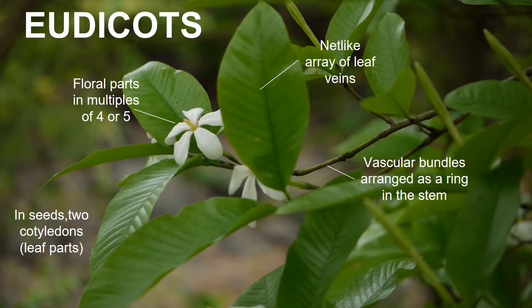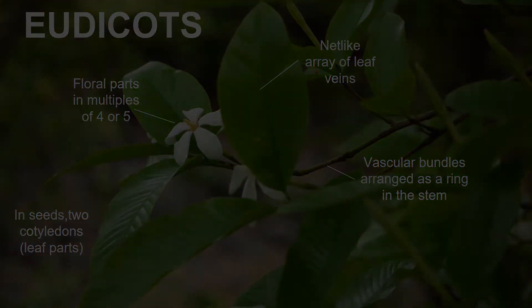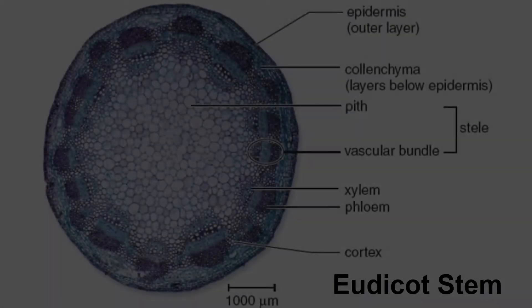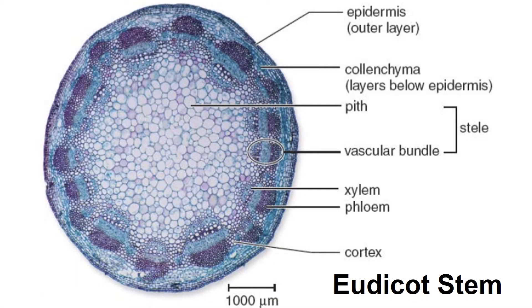Rubiaceae are classified as eudicots, as demonstrated by their number of flower petals and their net-like array of leaf veins. This also means that their seeds must have 2 cotyledons and their stems contain vascular bundles arranged in ring patterns. This stained cross-section of a eudicot stem shows the bundles in a ring on the outer edges of the stem, surrounding parenchyma cells in the pith region in the center.